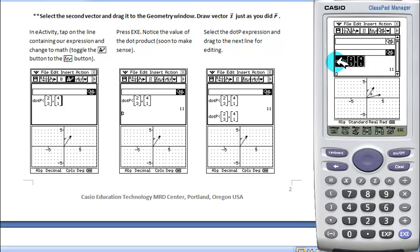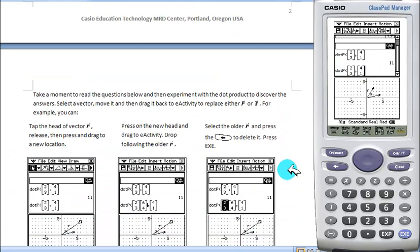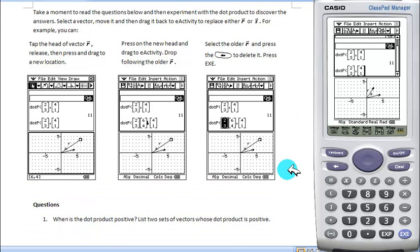Then we're going to select this line, drag it to the next line to copy it. And we're going to move our vector r. To move the head of our vector, we'll select it and drag it to, say, 6, 4. Then we can, with it selected, click and hold and drag it up to the eActivity. And it'll insert our vector. We're going to replace the 2, 3 with that. And voila.